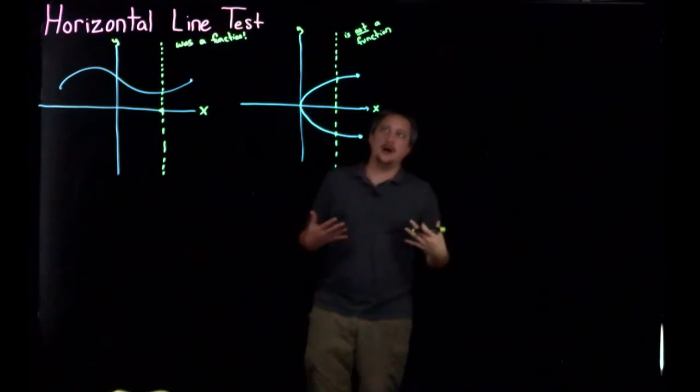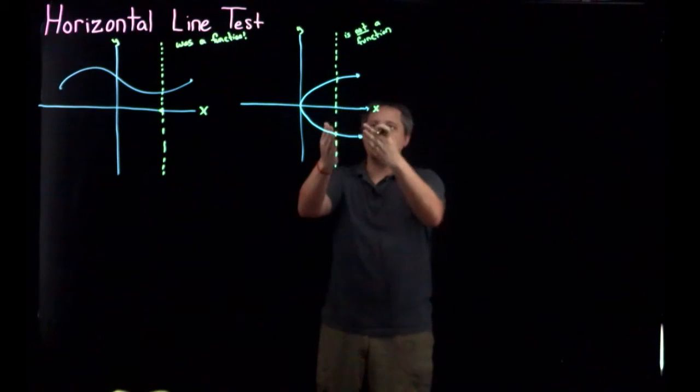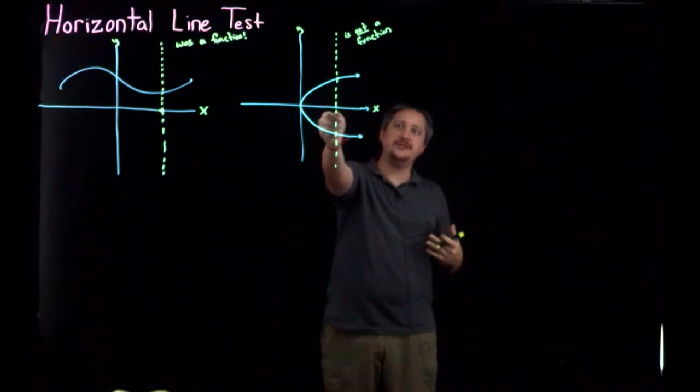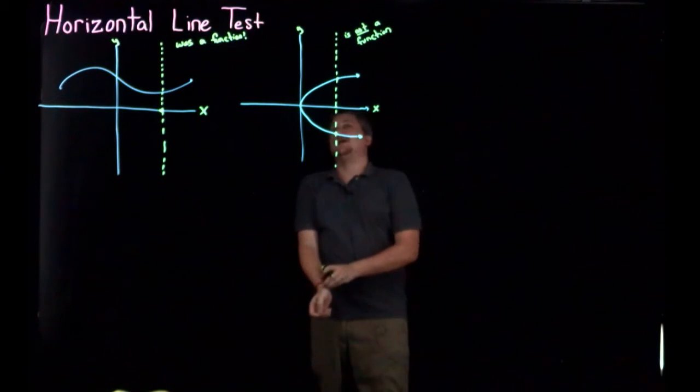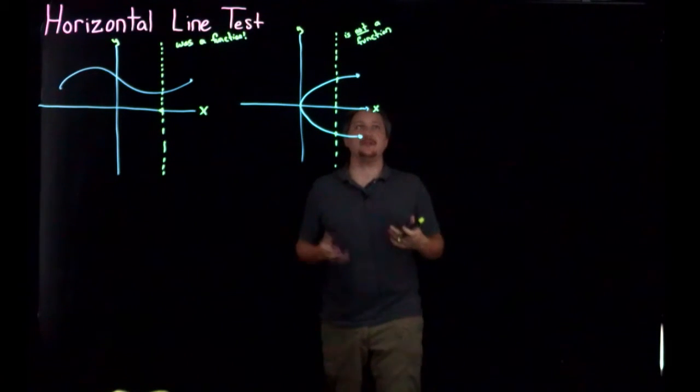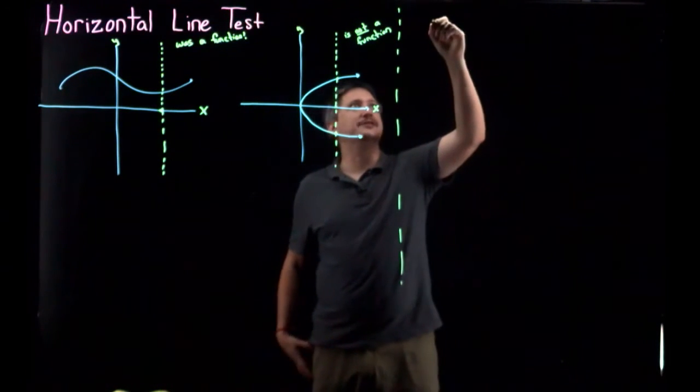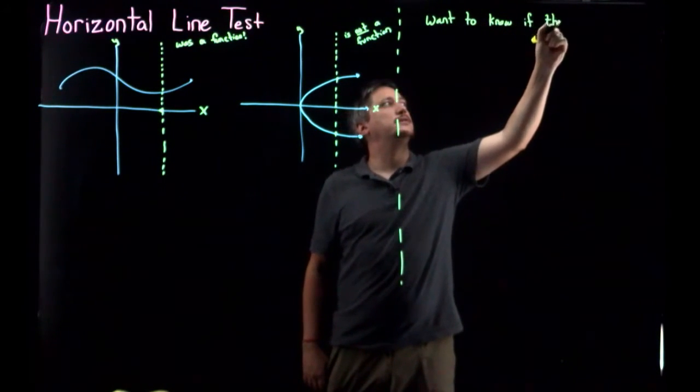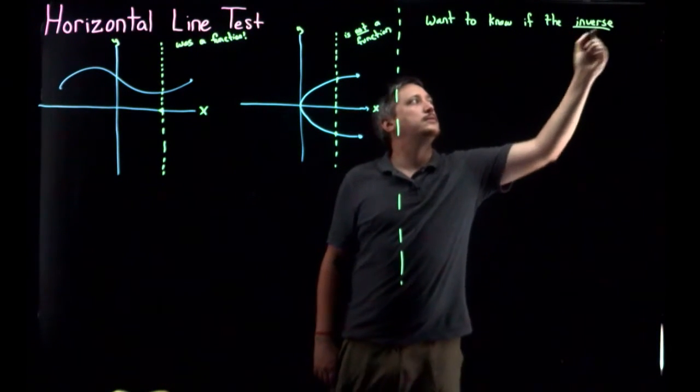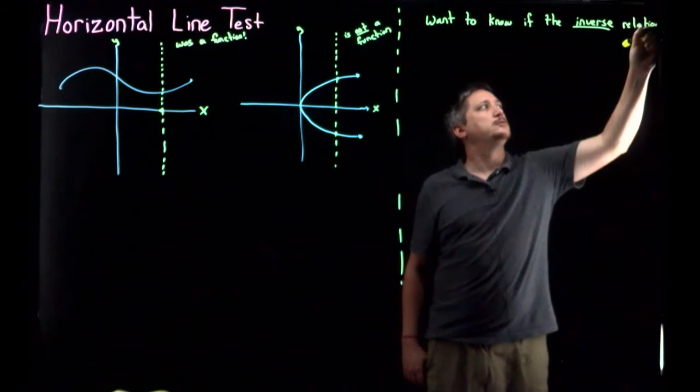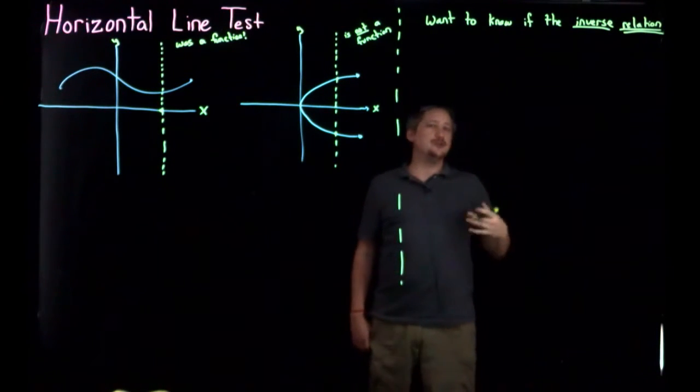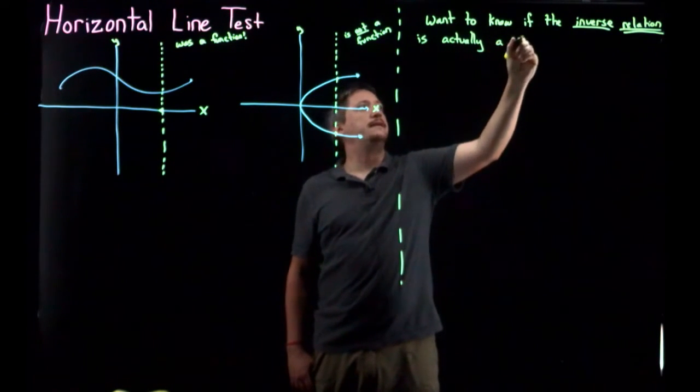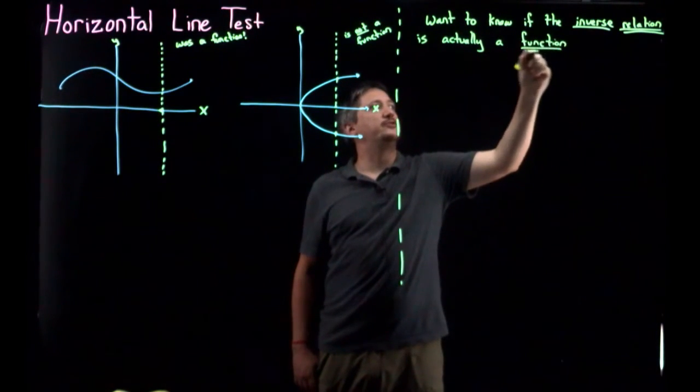Now, if you remember, the whole idea of the vertical line test was to test if it was a function by doing this input versus output with a vertical line. And we chose vertical lines because we did the input and we looked at all possible outputs. So now, let's say that we have a relation and we want to know if the inverse relation, where again, the relation always exists, but we don't really care about the relation, we want to know if the inverse relation is actually a function.